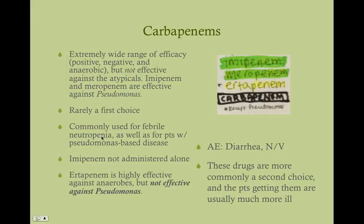Febrile neutropenia is like a fever of unknown origin in a patient with neutropenia — they could have a lot of things and you don't know. You want to get this patient covered for anything, so you put them on imipenem or meropenum, as well as something that covers atypicals. Imipenem is never administered alone — it's administered with the beta-lactamase inhibitor cilastatin. Ertapenem is highly effective against anaerobes but is not effective against Pseudomonas. Adverse effects are diarrhea, nausea, and vomiting.